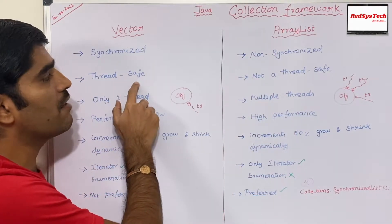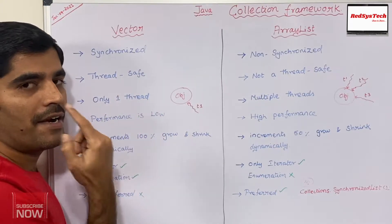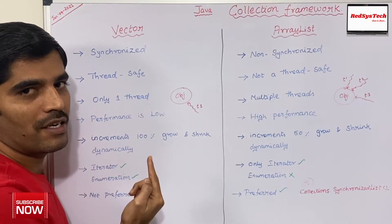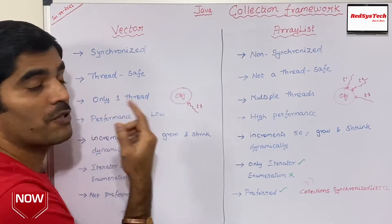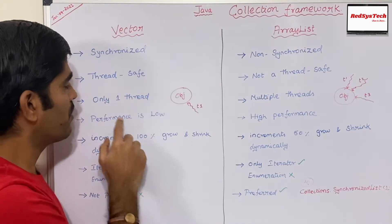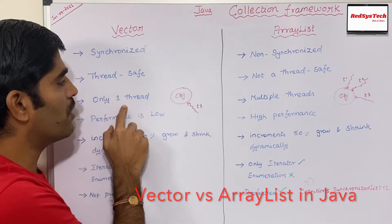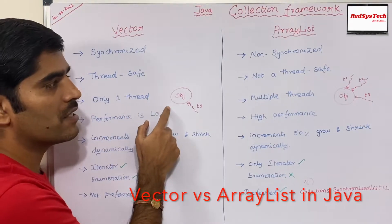When I say thread safe, it means at a time only one thread can able to access an object or the resource at the same time. So only one thread can able to access it.